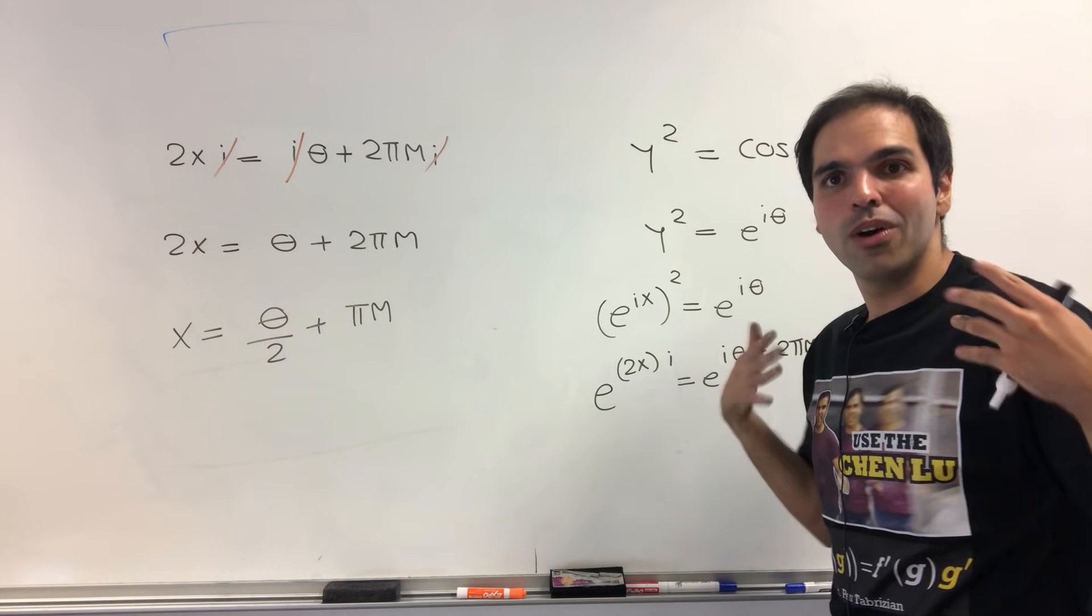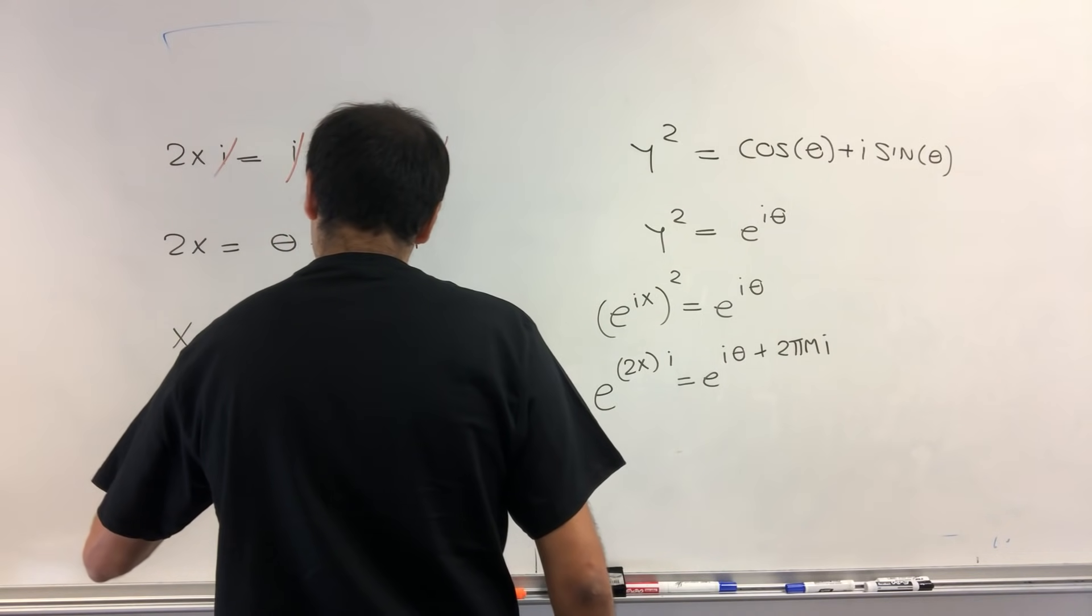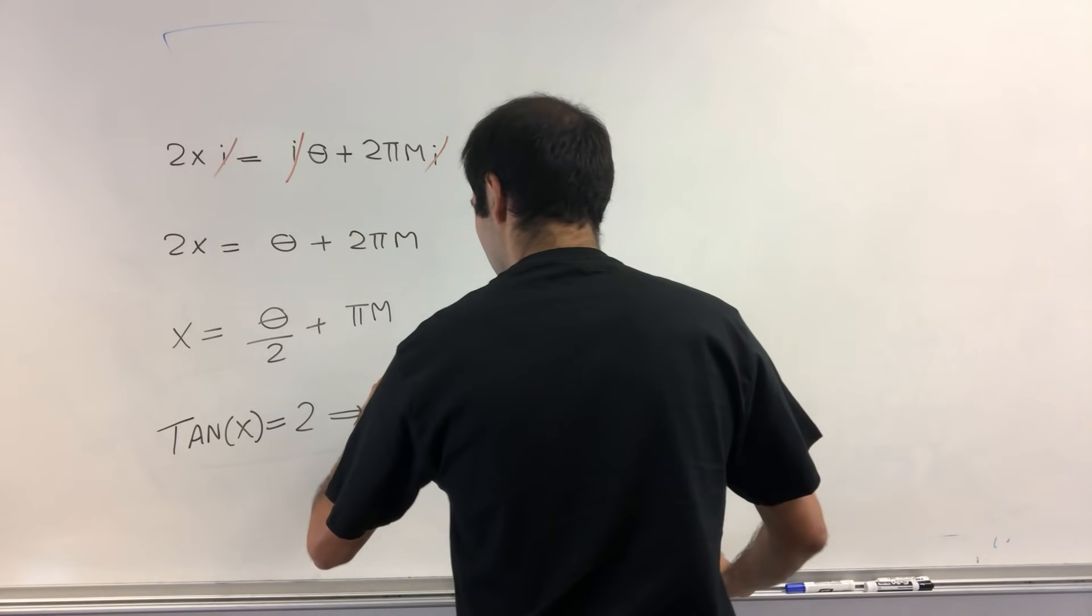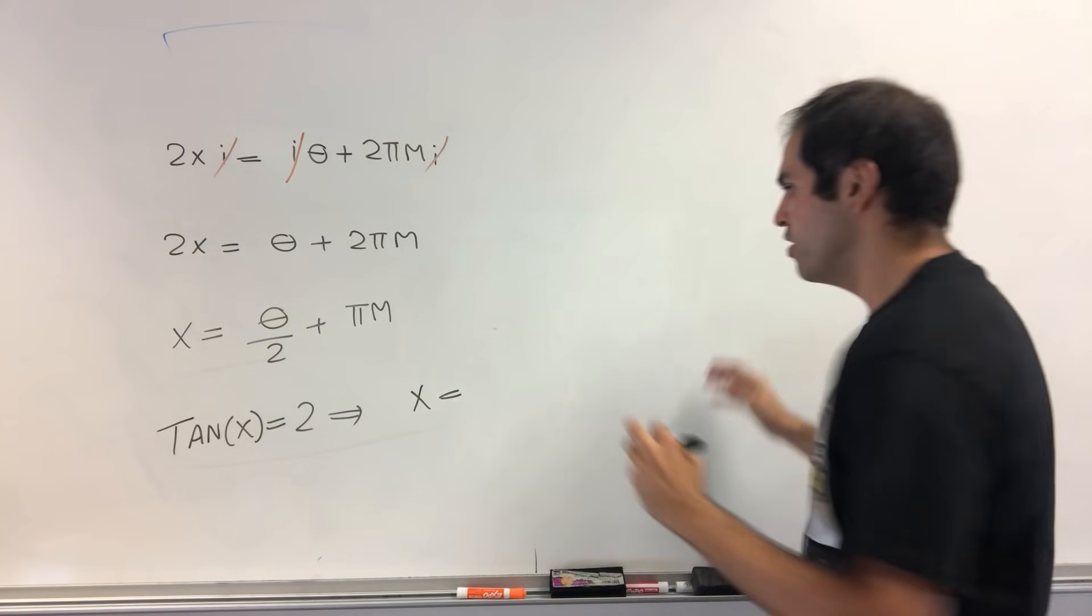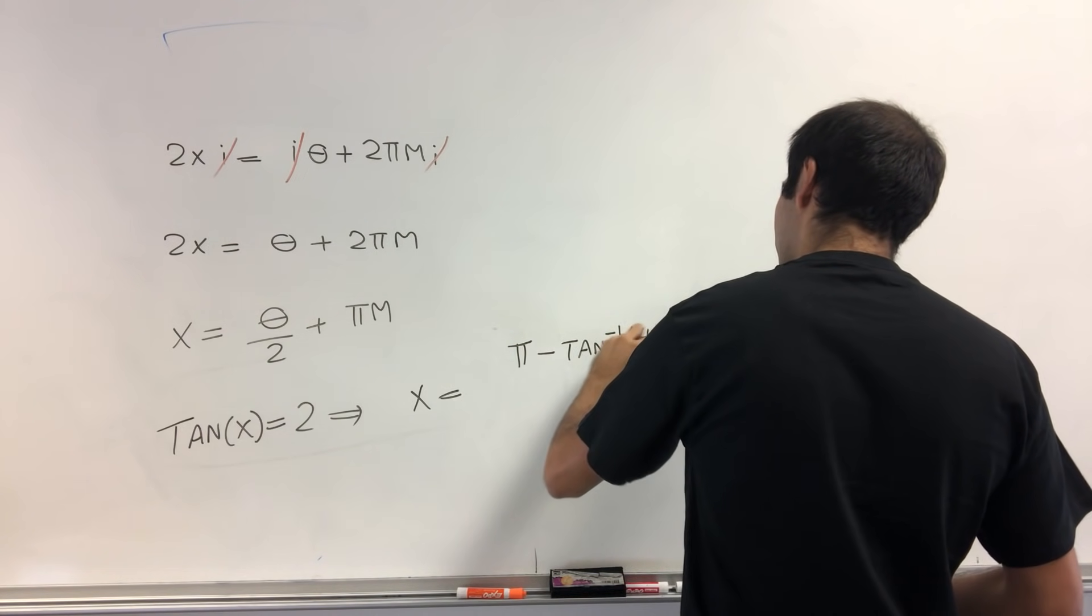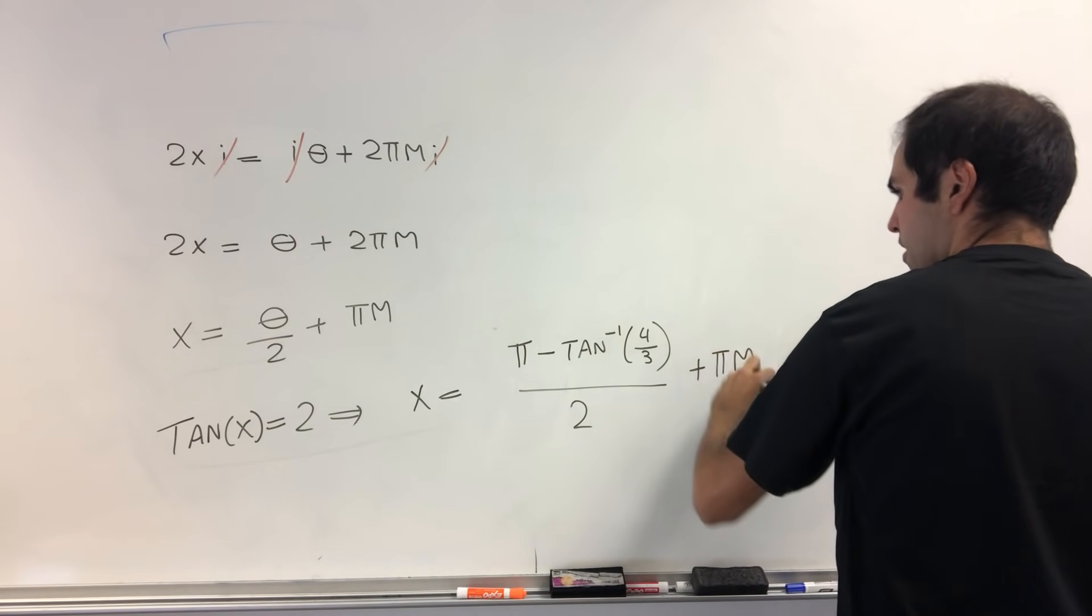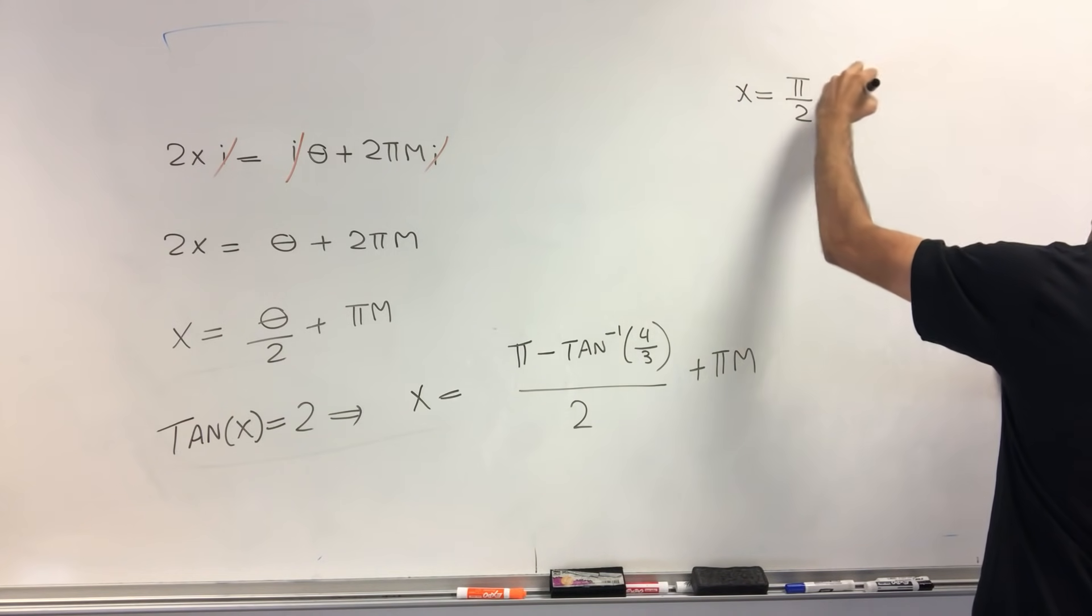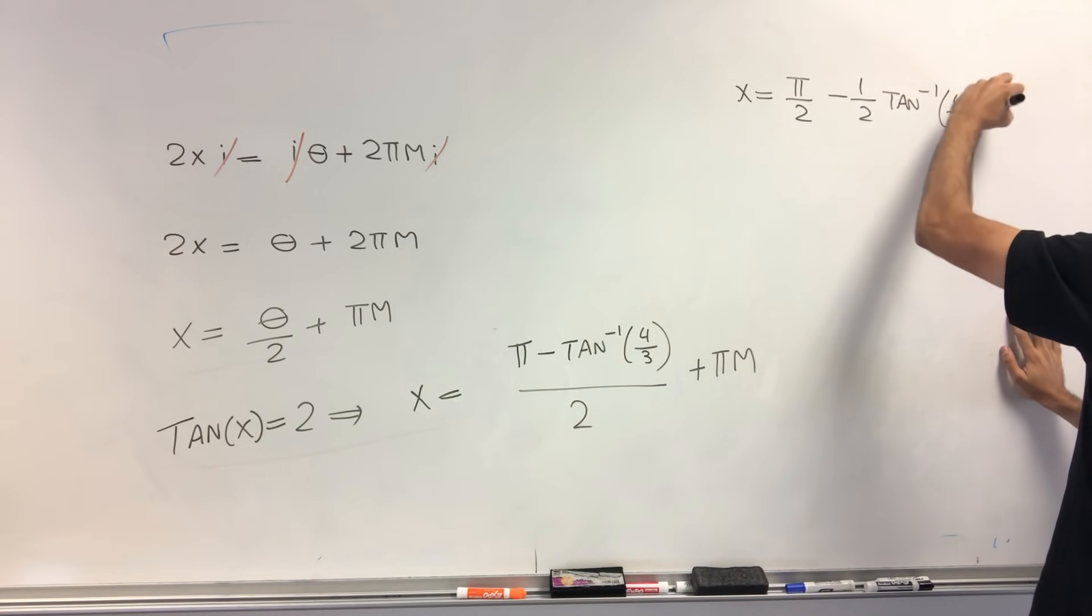Okay. So explicitly, what is this saying? Well, the solutions of tangent of x equals 2 are precisely given by x equals, so theta over 2, which, remember, was pi minus arctangent of 4 thirds over 2 plus pi m. So x is just pi over 2 minus 1 half arctangent of 4 thirds plus pi m.